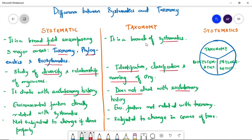Environmental factors are directly related with systematics because systematics deals with evolutionary history and environment is a major factor in the adaptation for evolution. Environmental factors have direct effect on systematics.